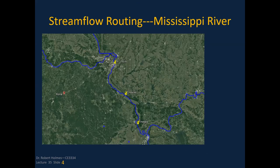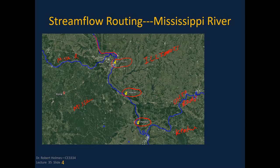Looking at the Mississippi River system: Illinois is here, Missouri here, Kentucky over there. The Mississippi flows from the north; the Missouri River flows in just north of St. Louis. We have USGS stream gauges at St. Louis, Chester Illinois, and Thebes Illinois. The Ohio River flows in and joins the Mississippi, which continues hundreds of miles downstream to the Gulf of Mexico.